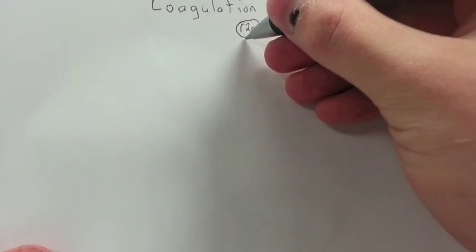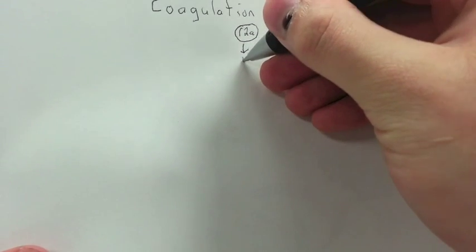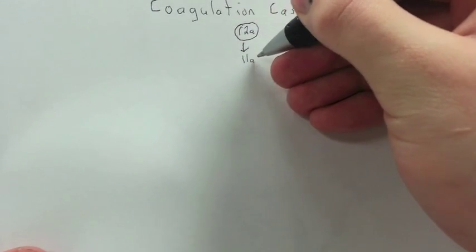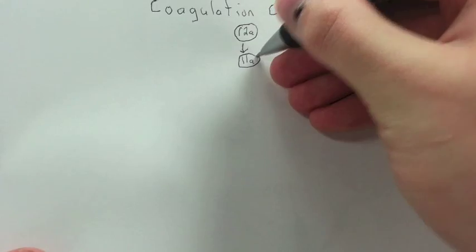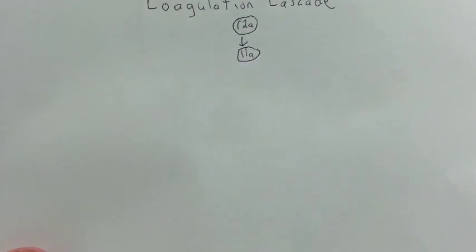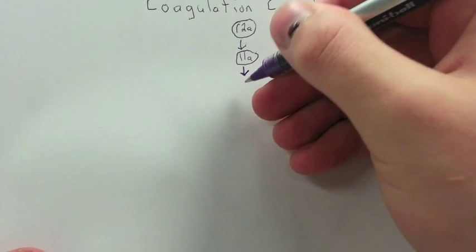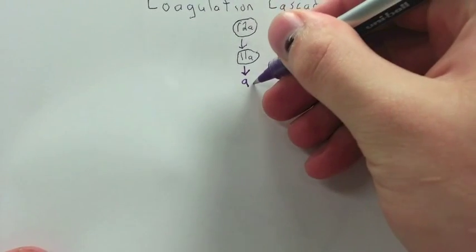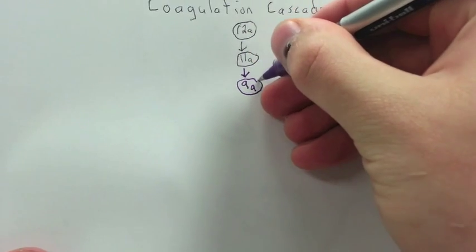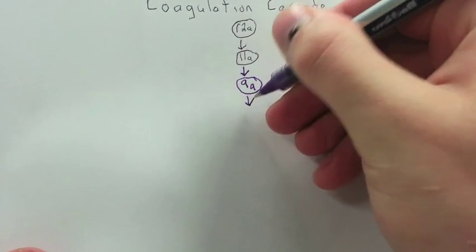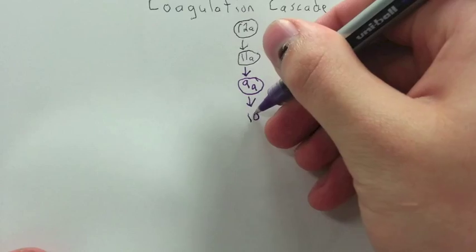So we go from 12a, which activates 11 into 11a. That's fairly straightforward, easy to remember, but we go from 11a activating 9 to make 9a here. And 9a acts on 10 to make 10a.